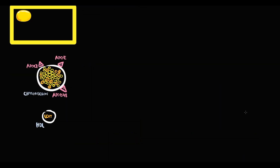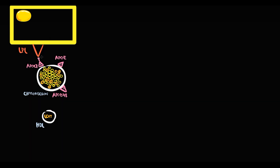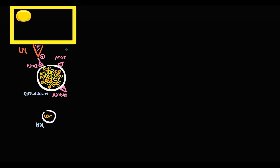The chylomicron then comes to an adipocyte. On the surface of the adipocyte is located a specific enzyme called lipoprotein lipase. When the chylomicron comes to lipoprotein lipase, ApoC2 on its surface activates lipoprotein lipase, and with that activation, lipoprotein lipase pumps triacylglycerols from the chylomicron into the adipose tissue.